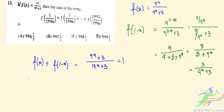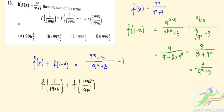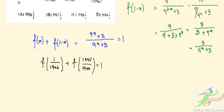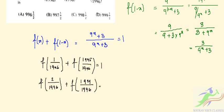From here we can write: f(1/1996) + f(1995/1996) = 1. Similarly, f(2/1996) + f(1994/1996) = 1. Moving like this, extending the terms, f(997/1996) + f(999/1996) = 1, and so on — giving us 997 such paired terms each equal to 1.